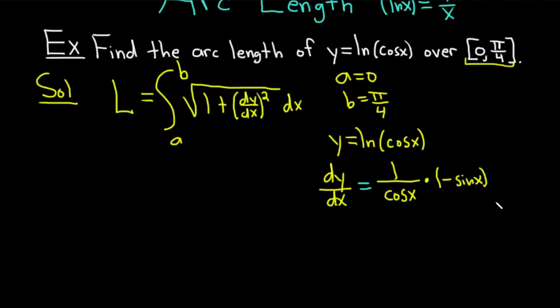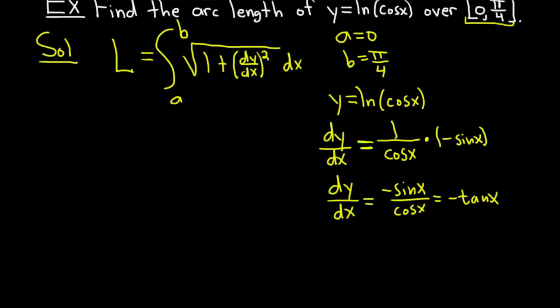So basically, you take the derivative of the outside, evaluate it at the inside. So just 1 over cosine x times the derivative of that inside function, which is negative sine. We can clean this up a little bit more. dy dx is equal to negative sine x over cosine x. That's just equal to negative tangent x. So dy dx is equal to negative tangent x.